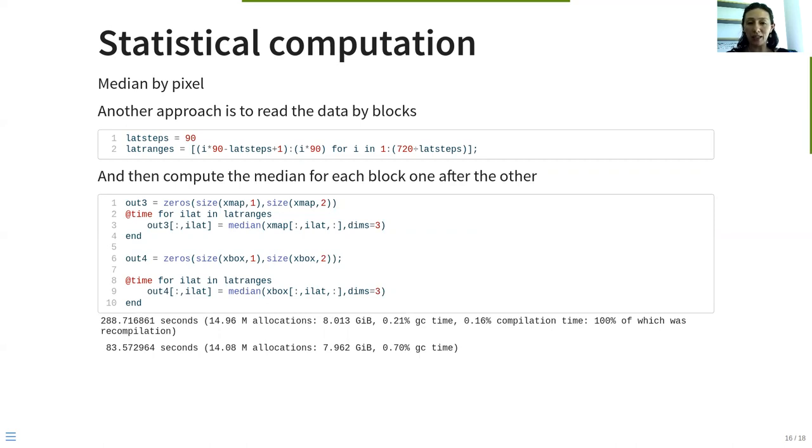Now we are computing the median for the entire dataset, and what we observe is that it takes around four minutes to do it when we are using the spatial chunking, while it takes around one minute twenty seconds for the box chunking.